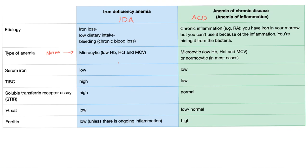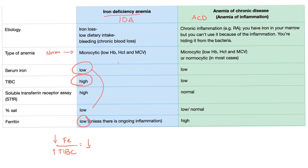For serum iron in iron deficiency anemia, there is low serum iron. When there is low serum iron, ferritin will also be low. Ferritin is always opposite to transferrin or TIBC, so when ferritin is low, TIBC is high. Percent saturation is serum iron over TIBC. The iron decreased and the TIBC increased, so the ratio goes down — that's why percent saturation is low.